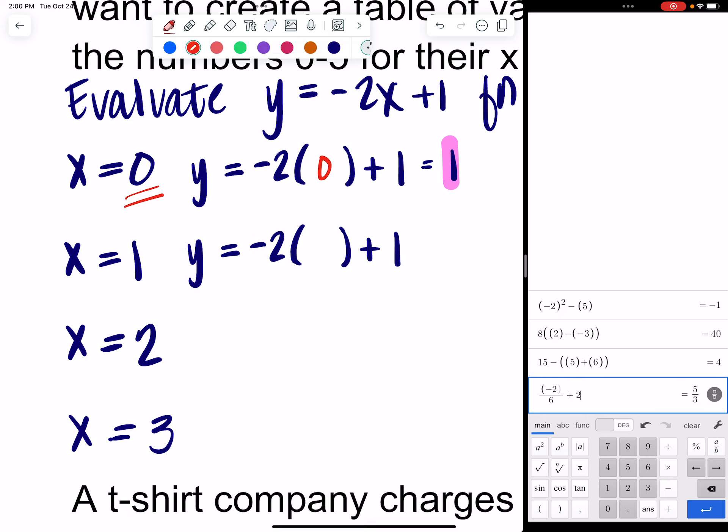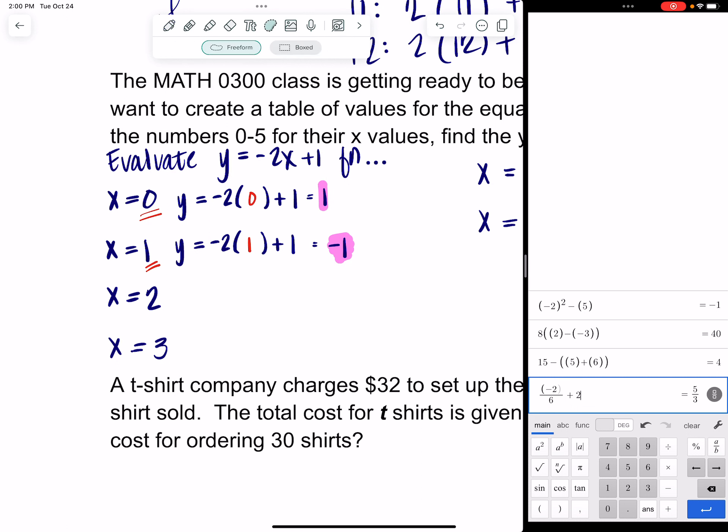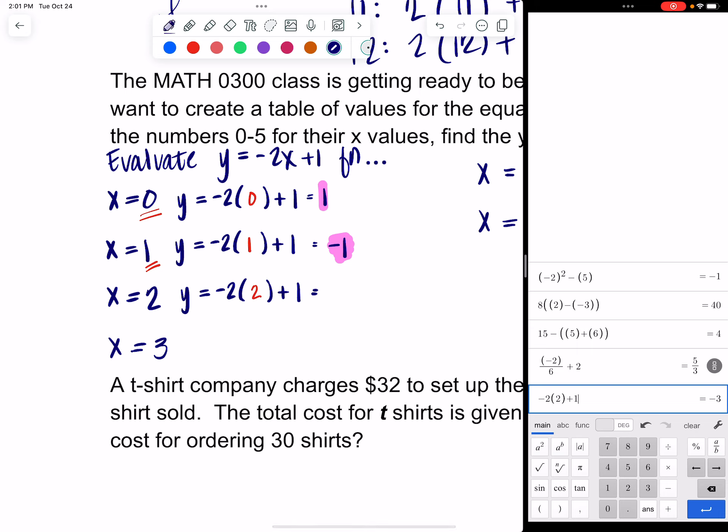Now I want to fill it in with x equals 1. Negative 2 times 1 is negative 2 plus 1 is negative 1. Now I want to evaluate for x equals 2. If you want to go to Desmos and that is totally acceptable. Encouraged even. Plug it in just like it looks and you get a negative 3.